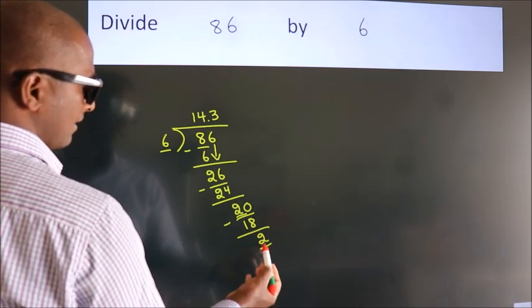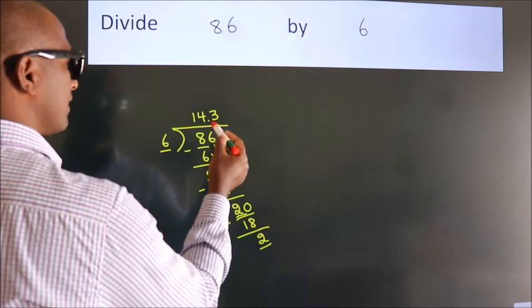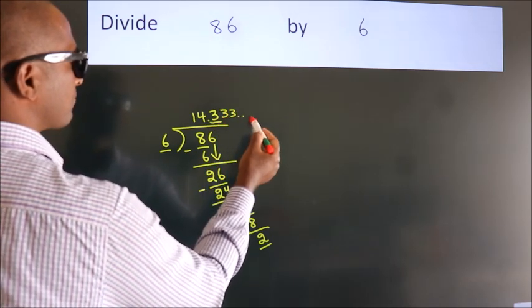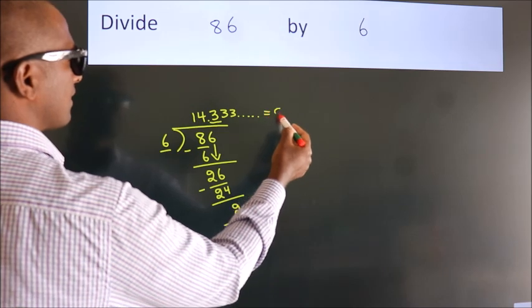That means this number keeps on repeating. So this is our quotient.